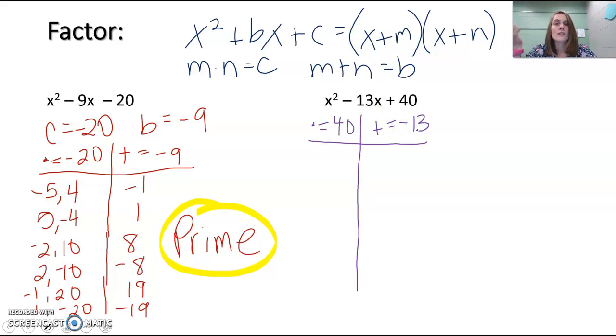Think about what multiplies to 40: 1 and 40, 2 and 20, 3 doesn't go into it, 4 and 10, 8 and 5. Let's try 4 and 10. Since it has to equal positive 40, it would be either 4 and 10, or -4 and -10. That gives us 14 and -14. That doesn't work.